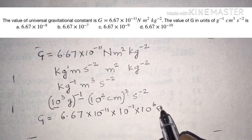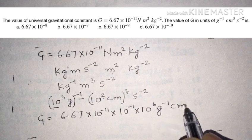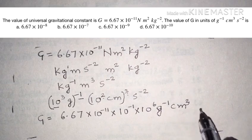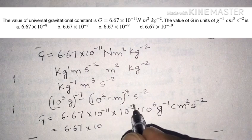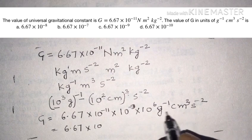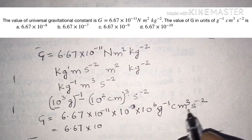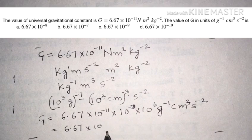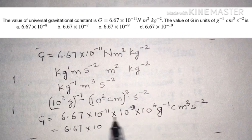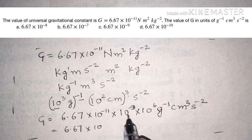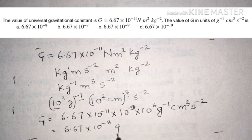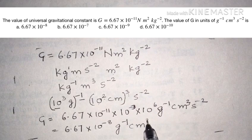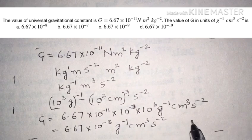Combining the powers: minus 11, then minus 3 gives minus 14, and minus 14 plus 6 gives power minus 8. So the final answer is 6.67 into 10 power minus 8 per gram centimeter cube per second square — that is option A.